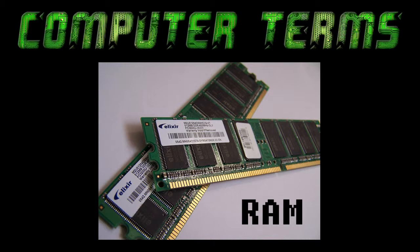RAM stands for Random Access Memory and its purpose is to transfer information back and forth between the computer processor and other devices in your system. RAM is a volatile type of memory, meaning that any data you send to it is only temporary and is lost when you turn off your computer. This is perfectly normal because your system has a hard drive which stores this information in the form of files until you erase them or move them manually.